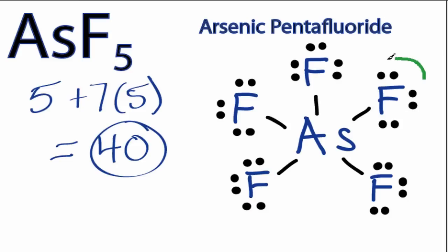At this point, all the fluorines have 8 valence electrons, so their octets are full, but the arsenic has 2, 4, 6, 8, 10 valence electrons.